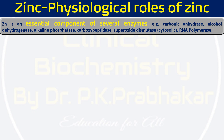Zinc is an essential component of several enzymes — these are called metalloenzymes. One enzyme we have already seen is carbonic anhydrase. Other enzymes associated with zinc include alcohol dehydrogenase (ADH), alkaline phosphatase, carboxypeptidase, cytosolic superoxide dismutase, and RNA polymerase. These are some of the enzymes that require zinc for their function.